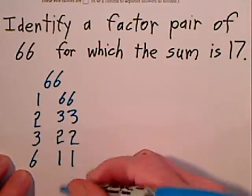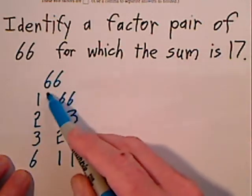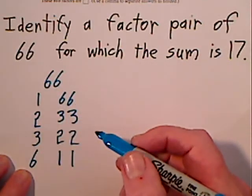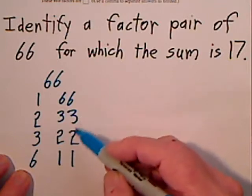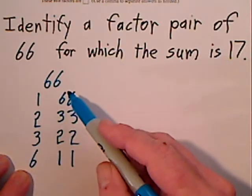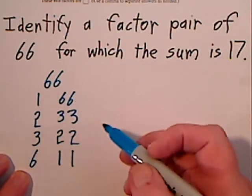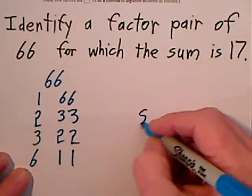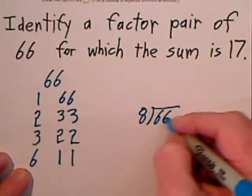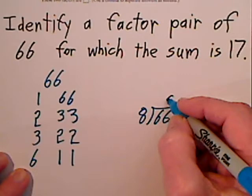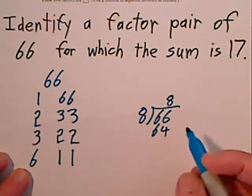7, you just have to try it in your mind but 7 won't go into 66. 8 won't work. And if you're not sure, just try the long division. Try 8 into 66. 8 times 8 is 64 so clearly that didn't work.